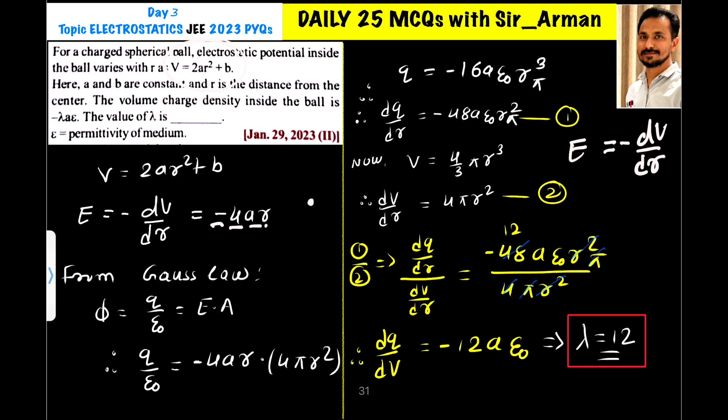Now, from Gauss's law, the electric flux through this surface is given by equation Q by ε₀.